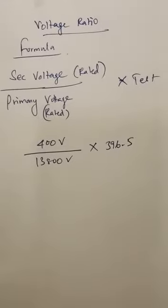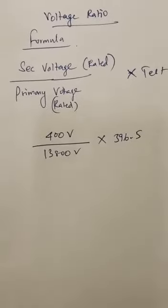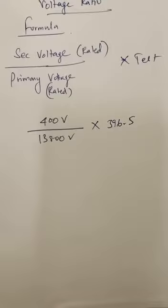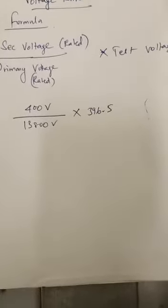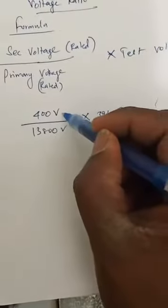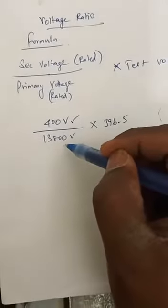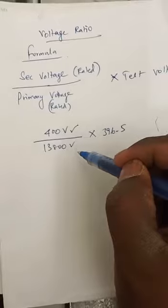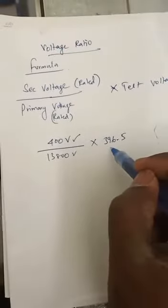This is the formula for voltage ratio: secondary voltage divided by primary voltage and multiply by test voltage. So our secondary voltage is 400 volt and 13.8 kV is the primary volt and our test voltage is 396.5.